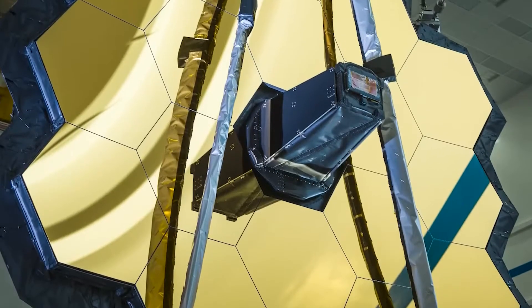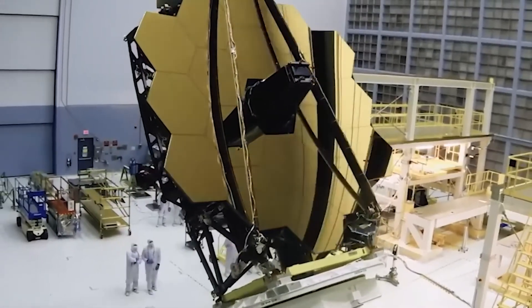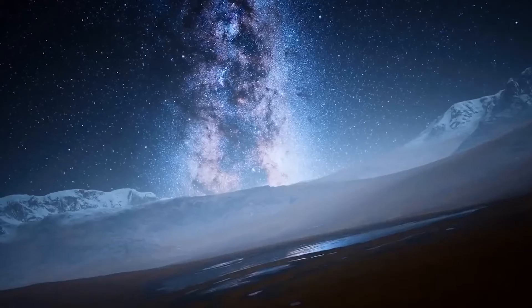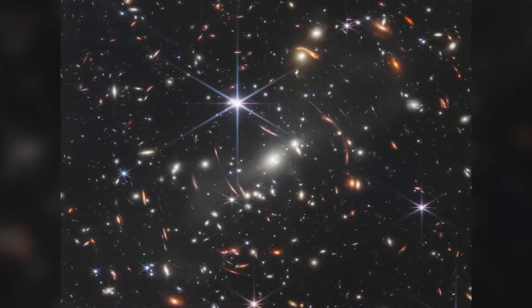Unlike the Hubble Telescope, the James Webb Space Telescope will not measure visible or ultraviolet light. Instead, it will have a greater capacity to perform infrared astronomy. It can detect a wide spectrum of wavelengths ranging from 0.6 to 28 micrometers.